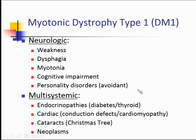It's also multisystemic — patients get endocrinopathies like diabetes mellitus and thyroid disease. They very commonly get cardiac issues: conduction defects and cardiomyopathy. They get polychromatic cataracts that sparkle with different colored lights on slit lamp testing — often called Christmas tree cataracts, which are nearly pathognomonic for myotonic dystrophy. They're also at greater risk of neoplasms.